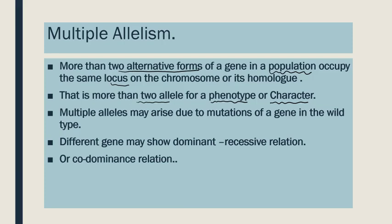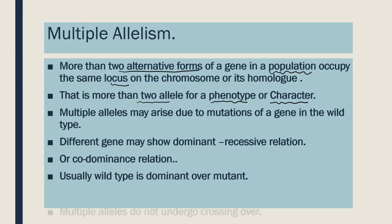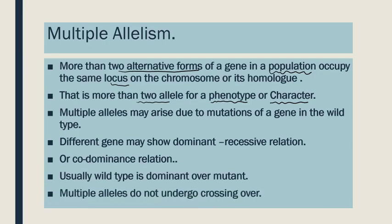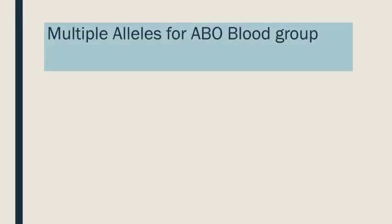I will explain every concept in detail in the next slide. Usually wild types are dominant over the mutant type. Multiple alleles do not undergo crossing over. Let us see multiple alleles for blood group — the ABO blood group.